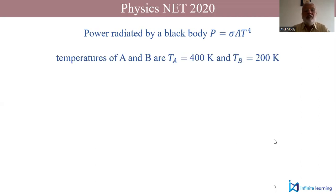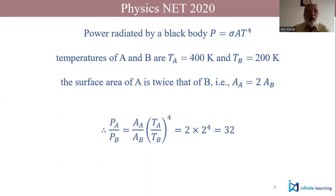These surface temperatures are given to us as 400 Kelvin and 200 Kelvin, and we are also given that the surface area of A is twice that of B. Therefore, the ratio of the two powers will be the ratio of areas and the fourth power of the ratio of temperatures.